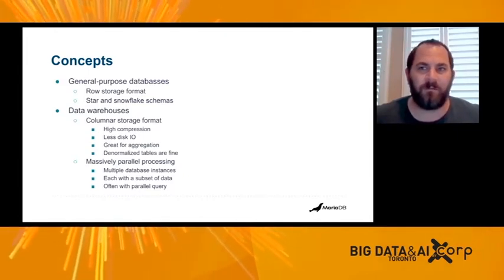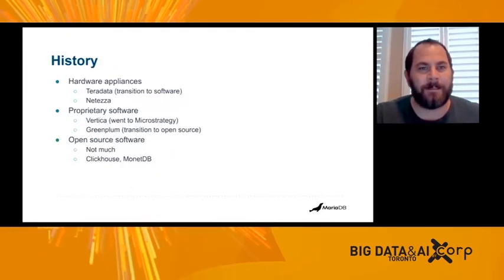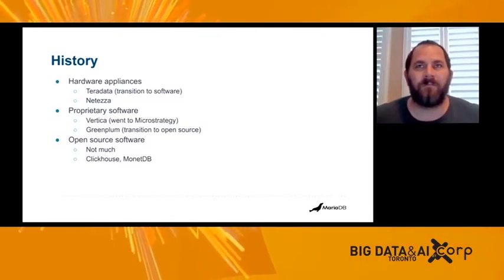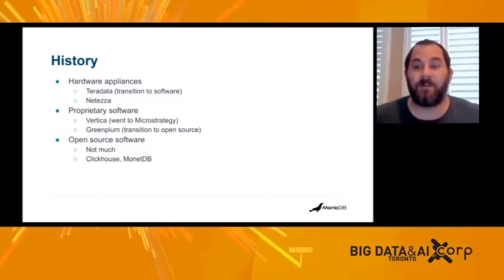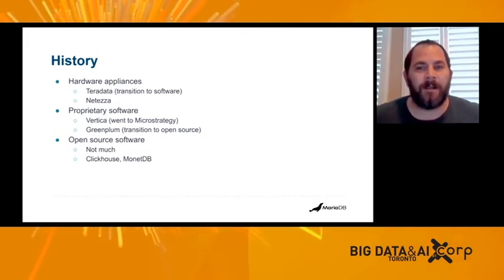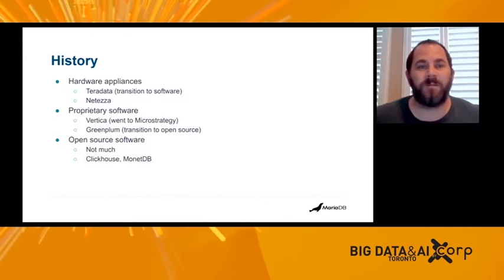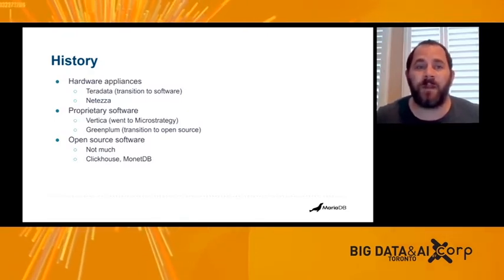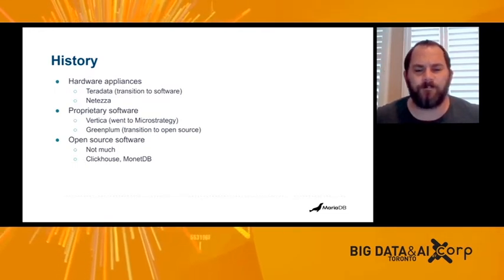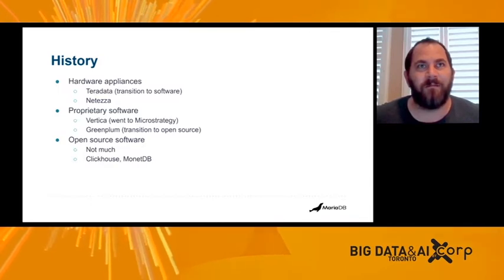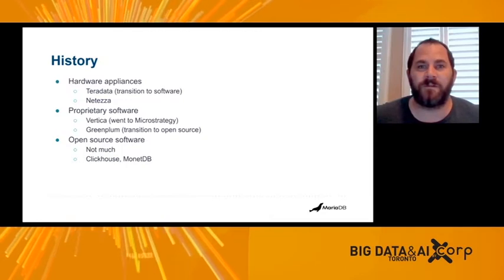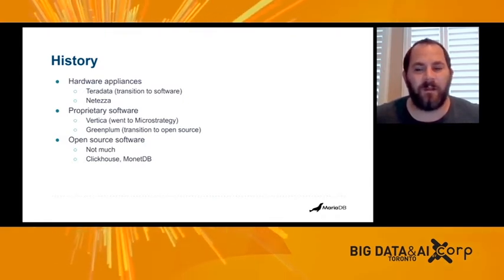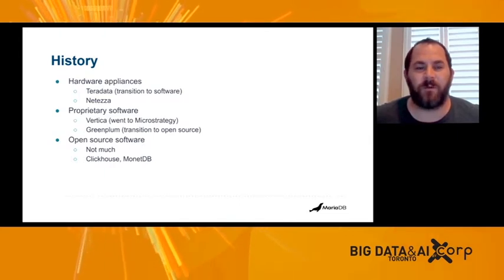A little bit about history. Early on we had the Teradatas and Terases of the world — hardware appliances, very expensive, proprietary. Some of those vendors did transition to a software approach. Then we had the next batch of proprietary software: HP Vertica, eventually sold off to MicroStrategy, and Greenplum, which was fairly well known for a while, though not too long ago they transitioned to open source as well. But beyond appliance and proprietary software vendors, there wasn't a whole lot by way of open source to choose from. There were a couple of smaller players — ClickHouse, MonetDB — but no real leaders in the open source data warehousing space.